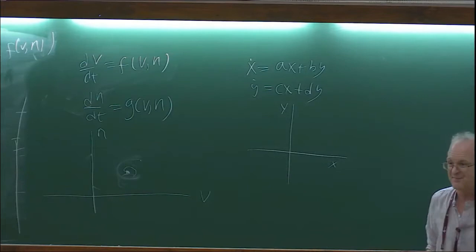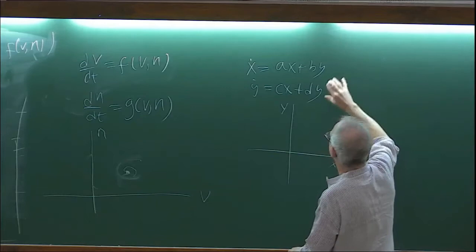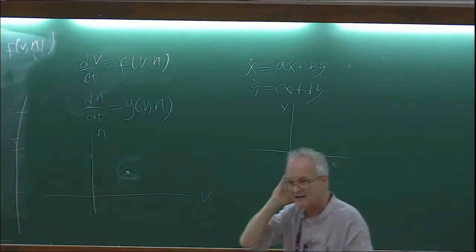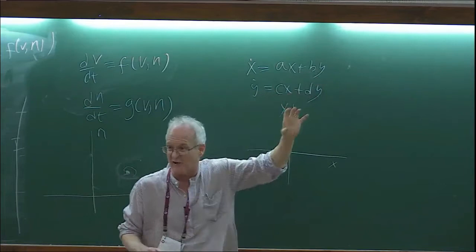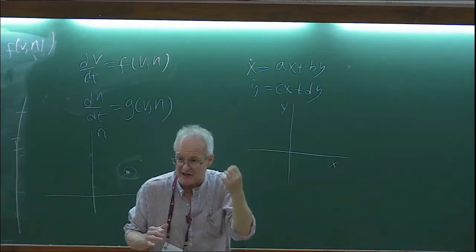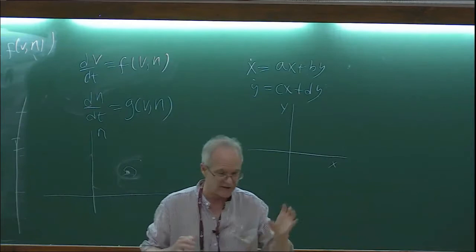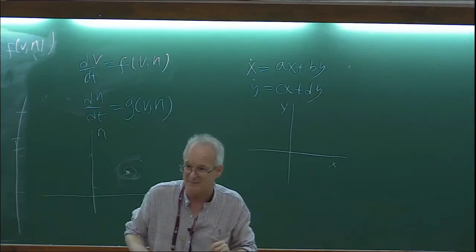Suppose the determinant is negative and the trace is positive. The equilibrium can be a line if a·d minus b·c is zero, but that means there's a zero eigenvalue. That's a very degenerate system. In general, generically, you won't have that.